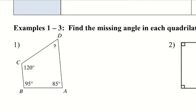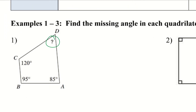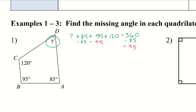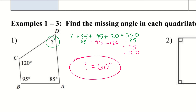Let's go ahead and try a couple examples where we have to find a missing angle. I like to start with one angle and make my way around. I can say: question mark plus 85 plus 95 plus 120 equals 360. If I subtract 85, 95, and 120 from both sides, I get question mark equals 60 degrees. Adding all four numbers together should equal 360.